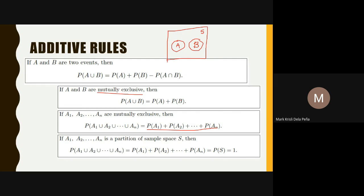If more than two events are mutually exclusive, then their probability is just equal to the sum of each of the individual probabilities. And if those events form a partition of the sample space, then the sum of all their probabilities equals the probability of the sample space.